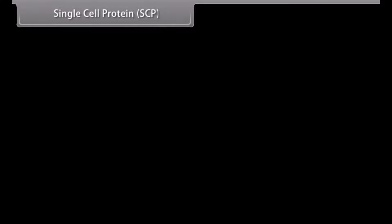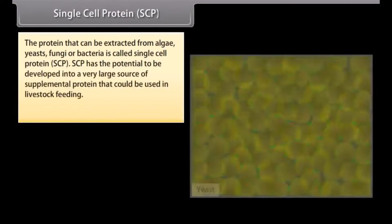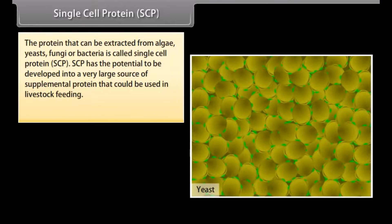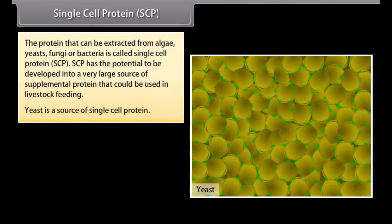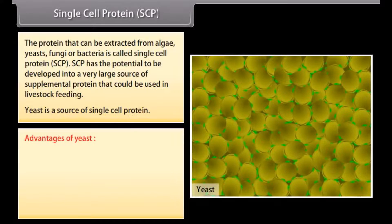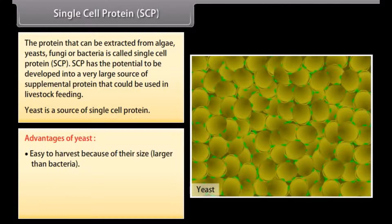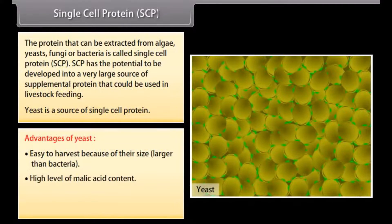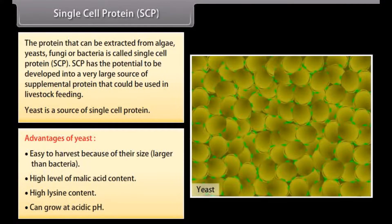Single cell protein (SCP): the protein that can be extracted from algae, yeasts, fungi or bacteria is called single cell protein. SCP has the potential to be developed into a very large source of supplemental protein that could be used in livestock feeding. Yeast is a source of single cell protein. Advantages of yeast include: easy to harvest because of their larger size compared to bacteria, high level of malic acid content, high lysine content, and the ability to grow at acidic pH.